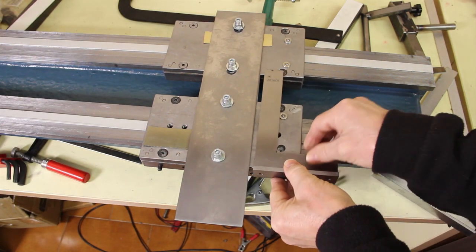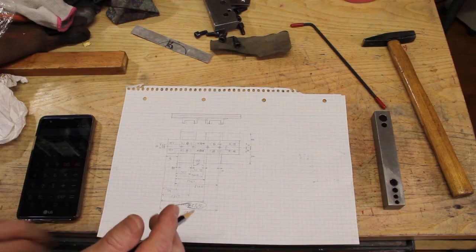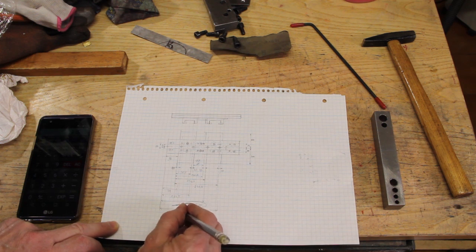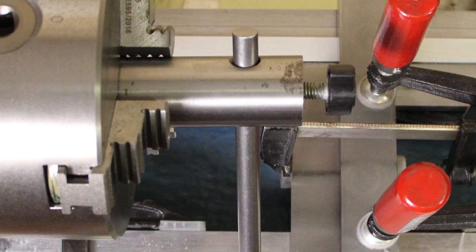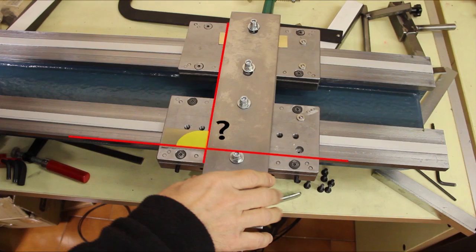Thanks to this jig, I realized that I had a problem about how to measure and have the cross slide squared with the ways. In the last short video, I posed some questions about the alignment of the cross slide.